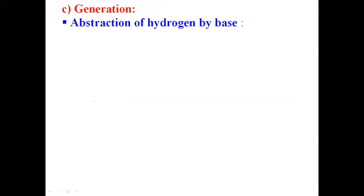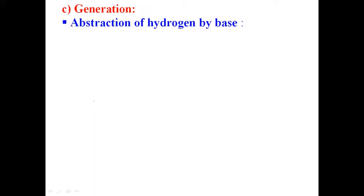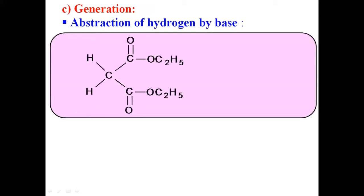Now let us see the generation of carbanion — how carbanions are formed during organic reactions. The first method is abstraction of hydrogen by a base. We know that a base has a tendency to abstract hydrogen, and there is a formation of carbanion. Let us see a simple example.